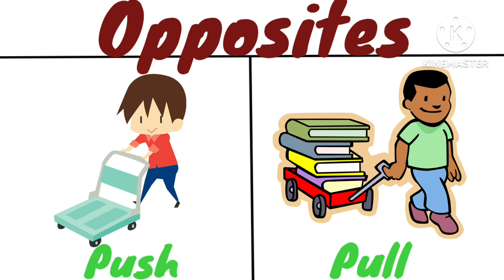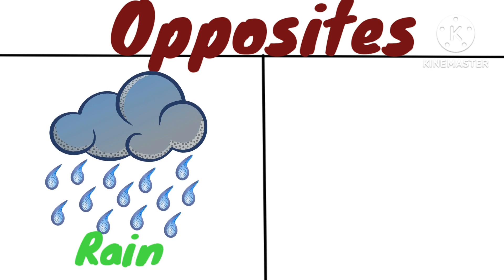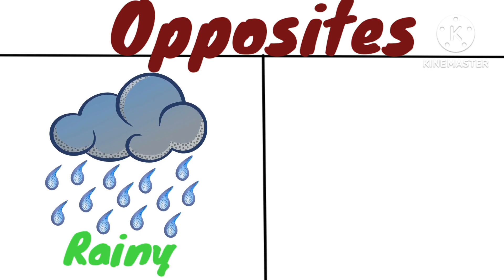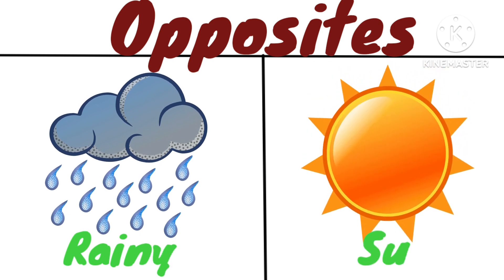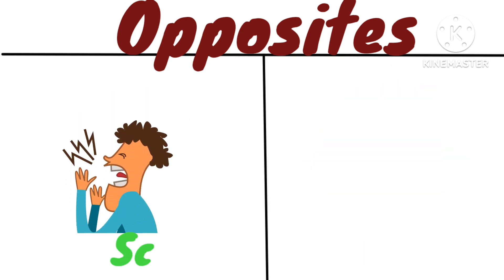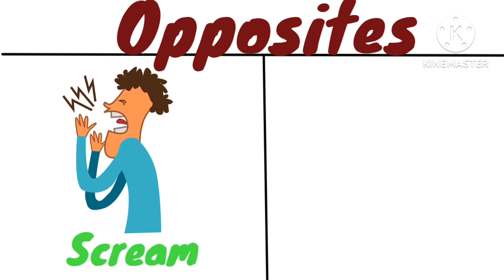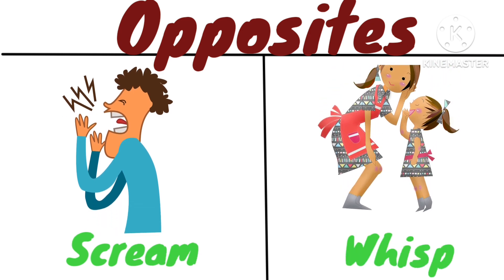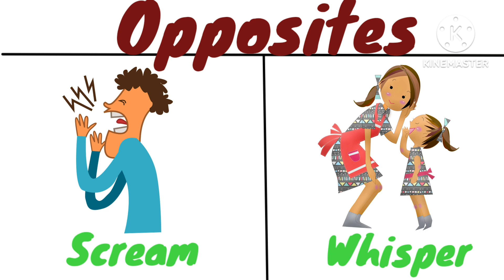Opposite of rainy is sunny — sunny weather. Opposite of scream is whisper. The boy is screaming, and the girl is whispering.